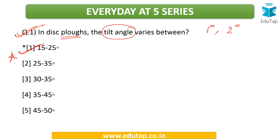The answer to this question is 15 to 25 degrees. We will keep the detailed explanation as part of a separate lecture — here we will just discuss certain MCQs. Now the first question for you to answer in the comment section is: list down some of the important primary and secondary tillage implements. Name them very clearly.